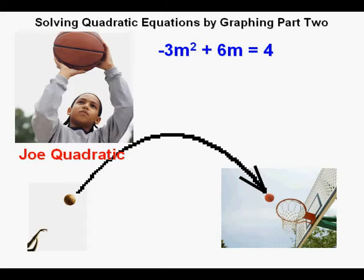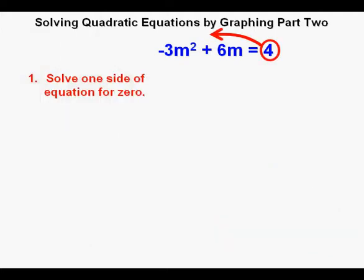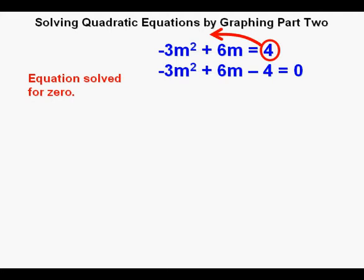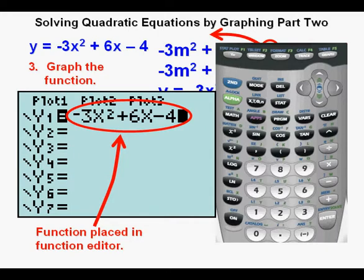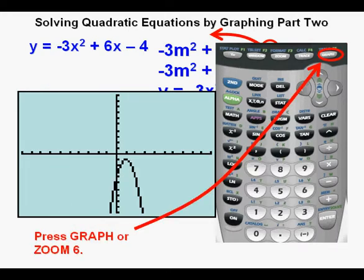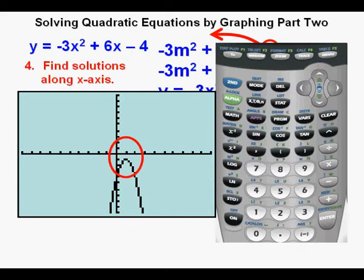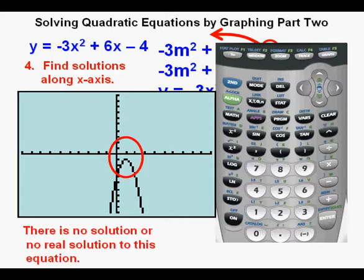Now let's look at: negative 3m squared plus 6m equals 4. Step 1: solve one side for zero. We move the 4 on the right side to the left side, where it becomes minus 4, leaving zero on the right. Step 2: we change the zero to y, the m's to x's, and flip the equation. We have y equals negative 3x squared plus 6x minus 4. Step 3: we place the function in the y equals view and press graph or zoom 6. Step 4: since the parabola does not cross or touch the x-axis, there is no real solution to this equation.